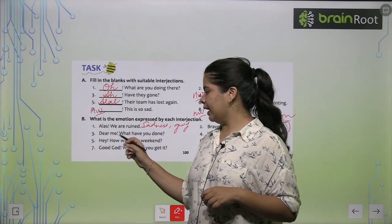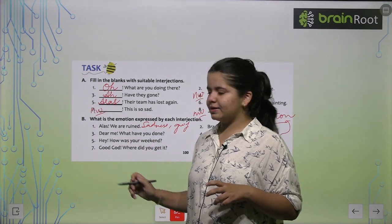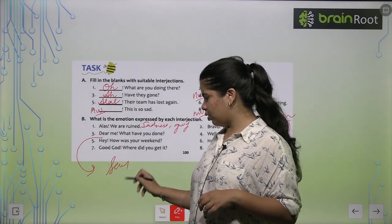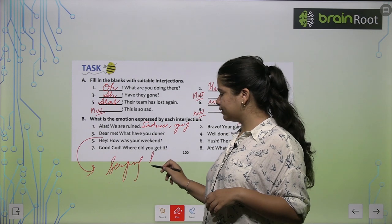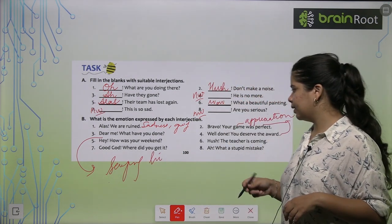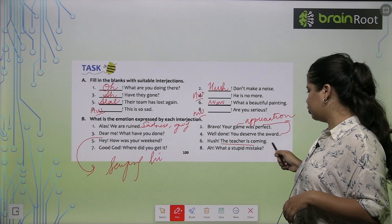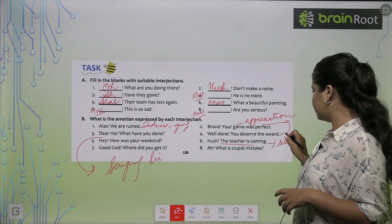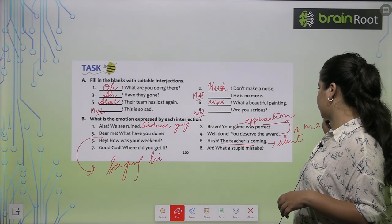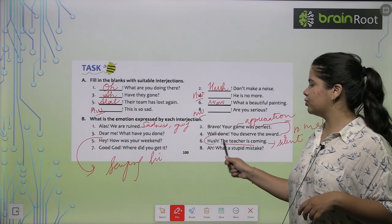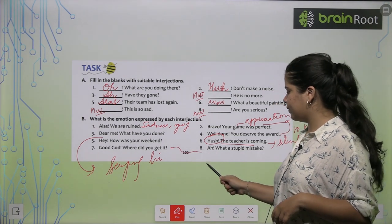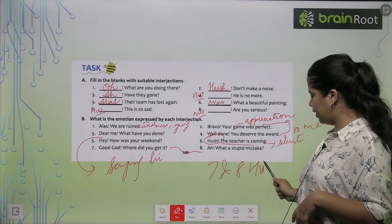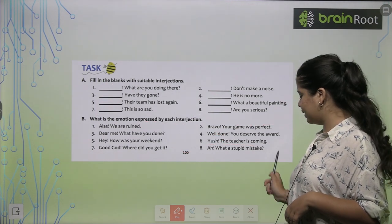Third: Dear me, what have you done? This you can say in a sorrowful manner, right? Fourth: Well done, you deserve the award. This is also appreciation, the same. Fifth: Hey, how was your weekend? This is saying hi, starting a conversation. You can use this in a happy mood. Sixth: Hush, the teacher is coming. When you want to make someone silent, if you remember, we use hush. So to make someone silent, we use the word hush. And the last two, the seventh and eighth, kindly try yourself in your homework. I hope you can do it.